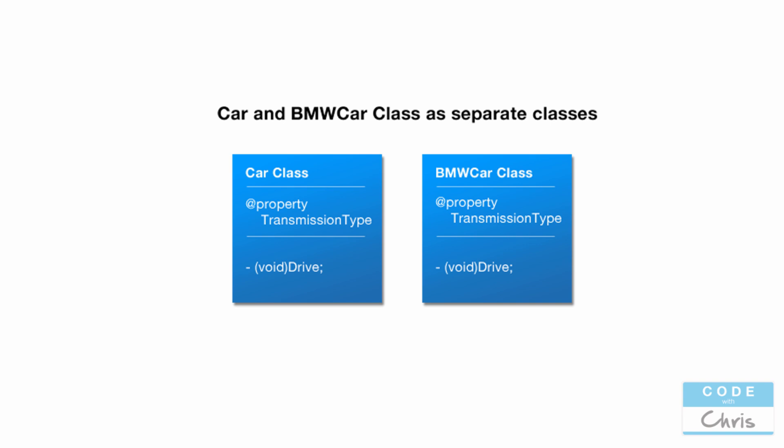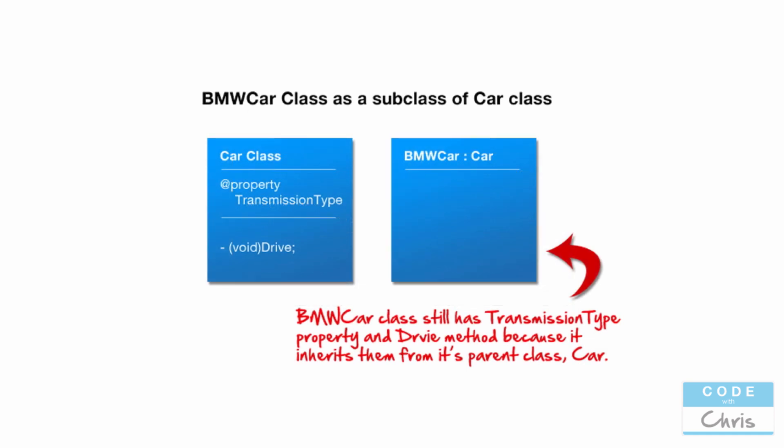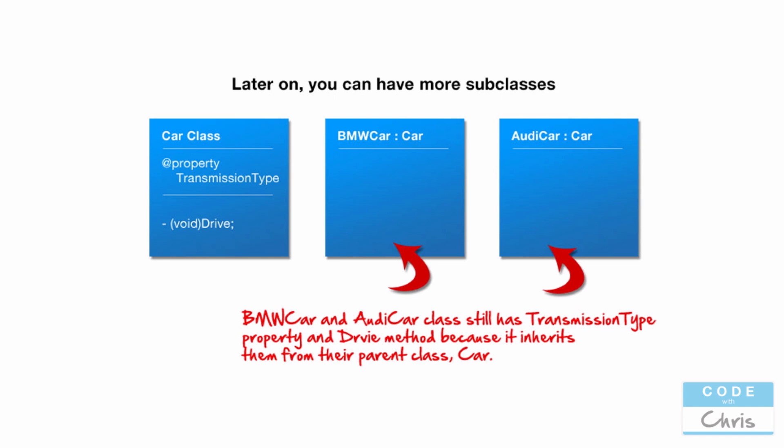All cars have a transmission type and should be drivable, so the Car class has a transmissionType property and a drive method. Now if we wanted a BMWCar class, we could declare drive and transmissionType inside it as a standalone class — but instead we can make BMWCar a subclass of Car. In this arrangement Car is the parent and BMWCar is the child. BMWCar inherits all properties and methods of Car, so you don't have to rewrite them. When another object calls drive on a BMWCar object, it calls the drive method defined in the parent Car class.